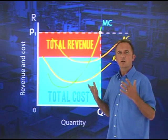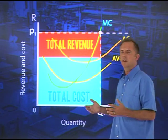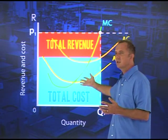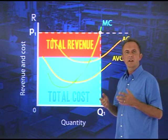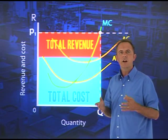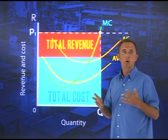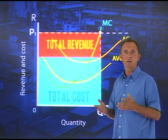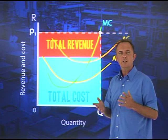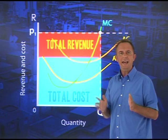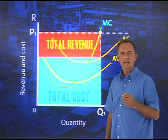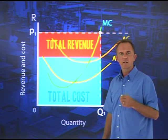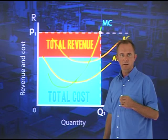We see that total revenue is greater than total cost. This means that the firm is making more than normal profits — it's also making economic profits at a selling price of P1.